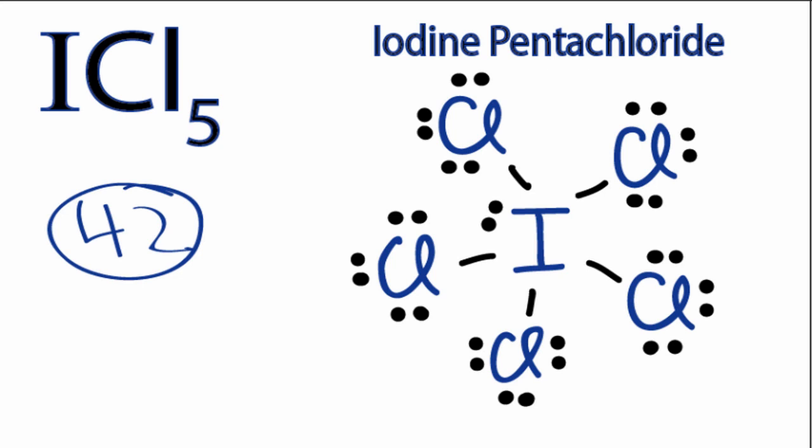If you check the formal charges, you'll find that for each atom in ICL5, the formal charge is 0. So this is the Lewis structure for ICL5.